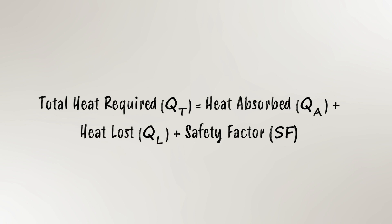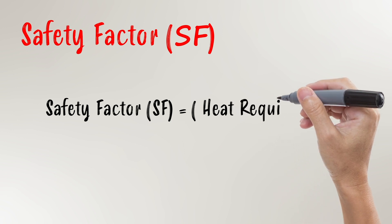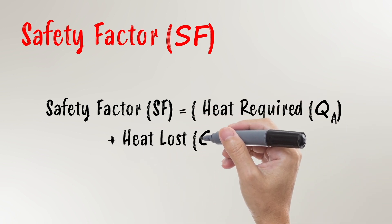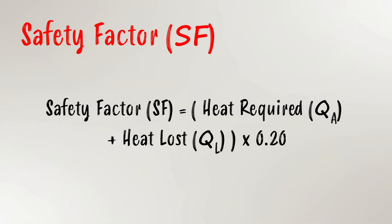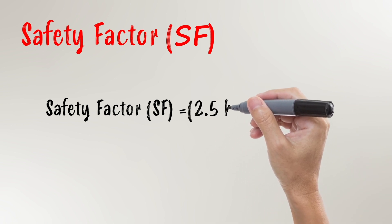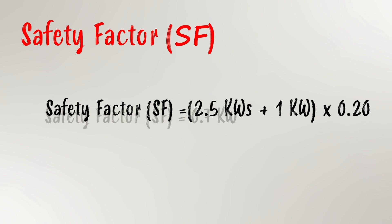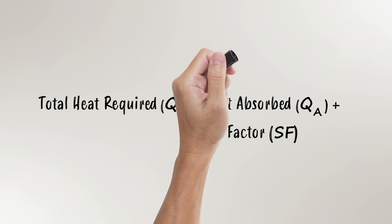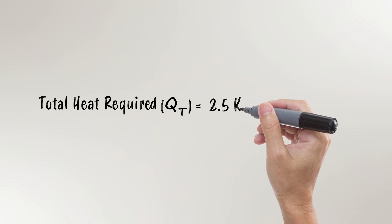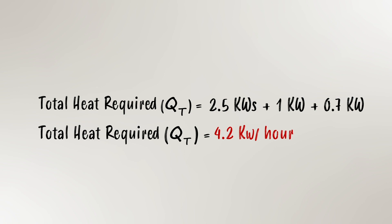Time to move on to the final component: the safety factor. This component ensures that you'll have more than enough energy available for your application. We recommend adding at least 10%, sometimes up to 20% if the conditions are uncertain or there are many unknown variables. You add your QA and your QL values together and multiply by 20%, giving us a safety factor of 0.7 kilowatts. Once you've calculated that, all that's left is to add the three numbers together — and you're done. You have now successfully calculated the total energy required for your heating application. In our scenario, we get a final total of 4.2 kilowatts per hour.